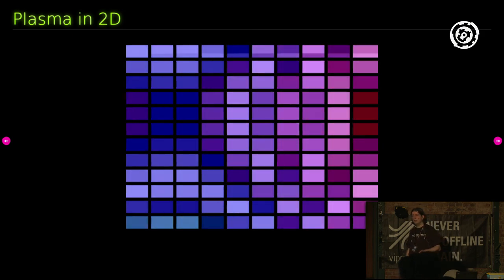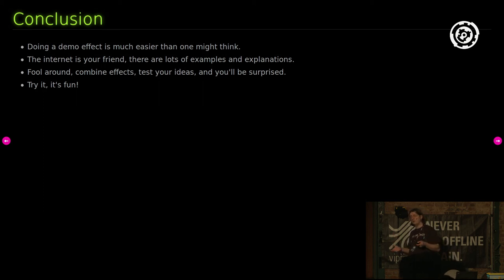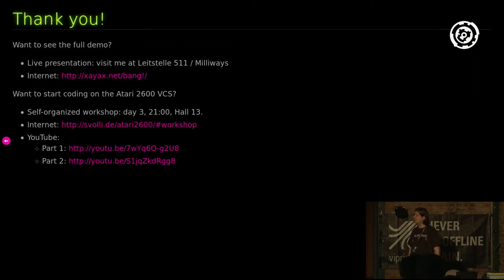That's all to it as well. I can only come to a conclusion: doing such a demo effect is much easier than you might think. There are tons of examples of plasma code with lots of explanations. Just toy around, try to figure out what a parameter does and how you can fool around with it. Maybe you can also change a parameter by getting input from the sound you play to get a match in there. You can also use it in an application's splash screen for a little bit of animation. That's really all there is to this. Thank you for this one.